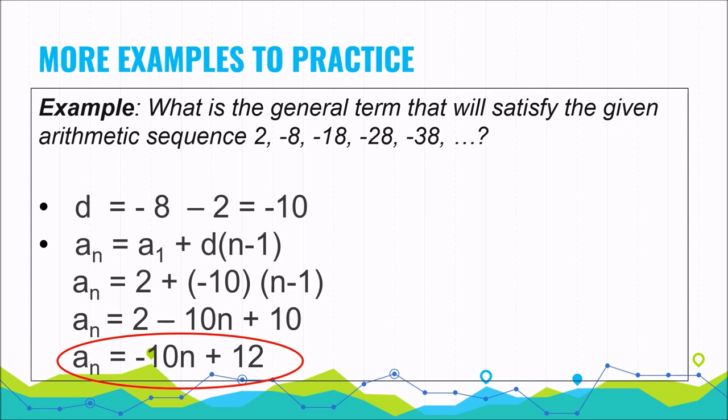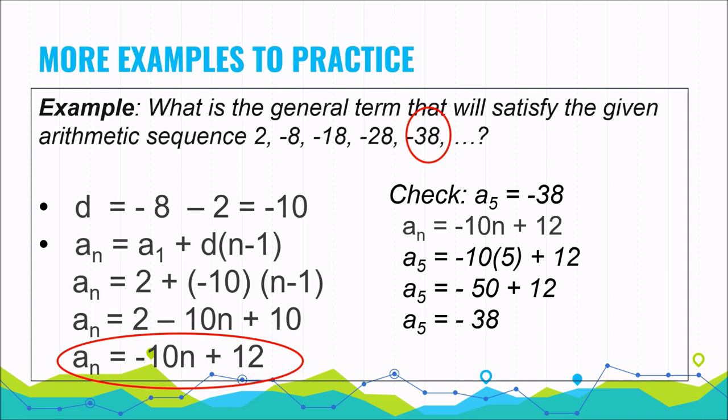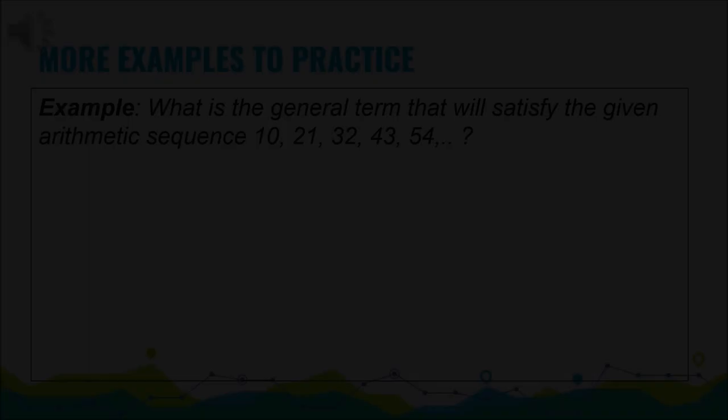To check, verify that the equation gives a sub 5 equals negative 38. Substituting n equals 5 into a sub n equals negative 10n plus 12, we get the final answer of negative 38. Therefore, the general term or equation is a sub n equals negative 10n plus 12.